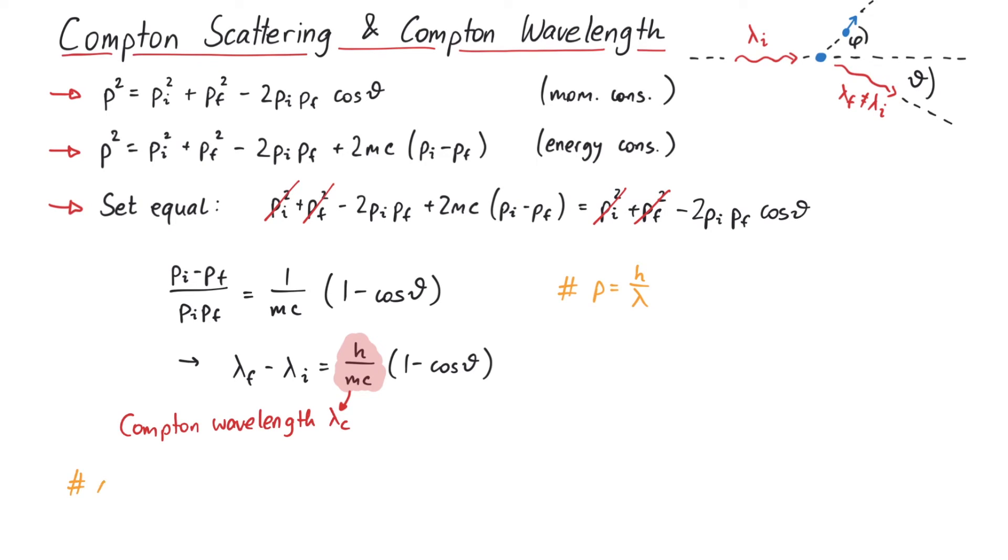For example, the Compton wavelength of an electron is around 2.4 times 10 to the minus 12 meters. Finally, since a cosine can only take on values between minus one and plus one...